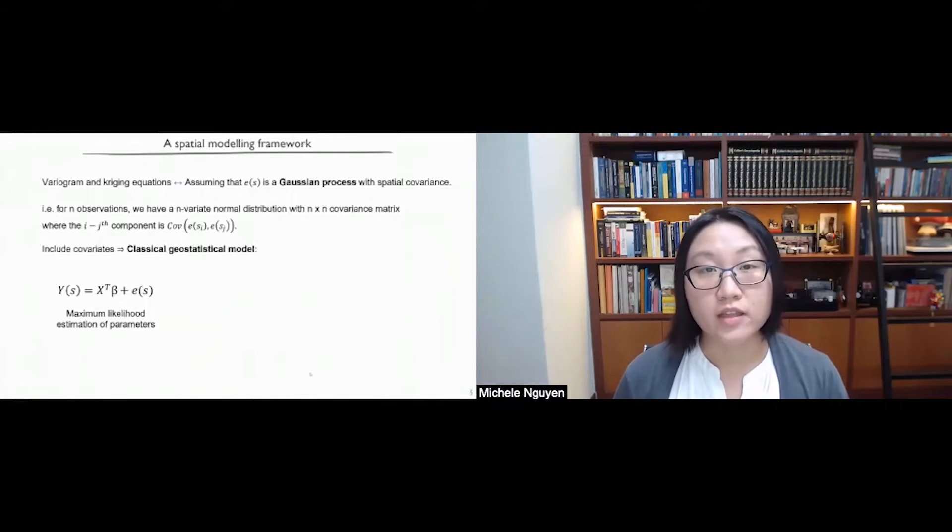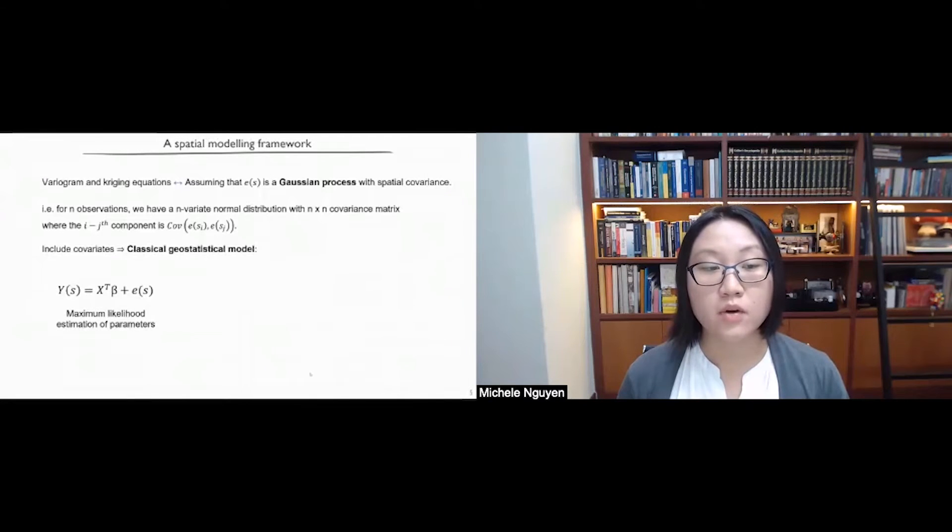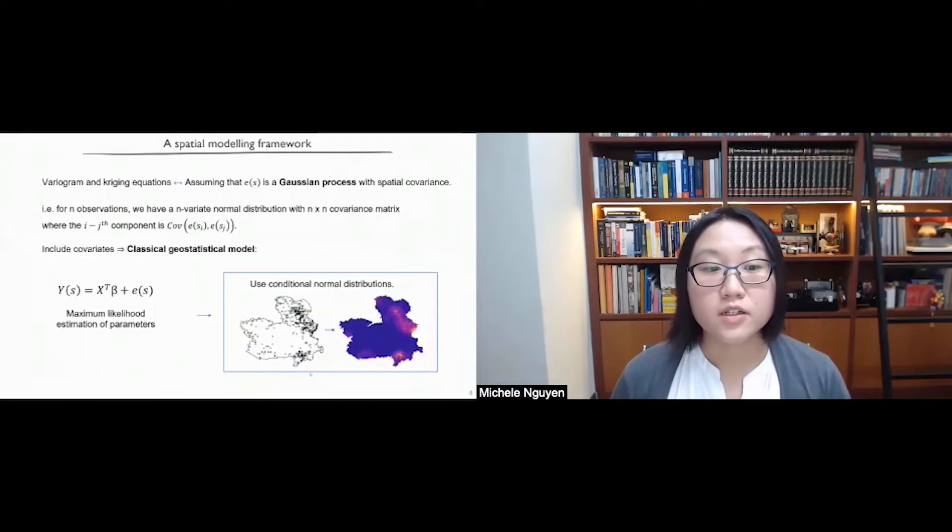If we want to include other factors which might affect the spatial variation in our observations, then we typically do this in an additive fashion. And this would give us the classical geostatistical model as shown in this equation here. Here, y corresponds to our observations at a particular location s, x is our vector of covariates, beta is our parameter coefficient vector which tells us how these covariates affect our observations, and e is a mean zero Gaussian process which tries to capture the residual spatial variation. So one way that we can estimate our parameters of the model is to maximize the likelihood of us observing the data that we have. And this means we use a maximum likelihood estimation method. And once we have done that, we can then use the conditional normal distributions to estimate at the unsampled locations given our observations.